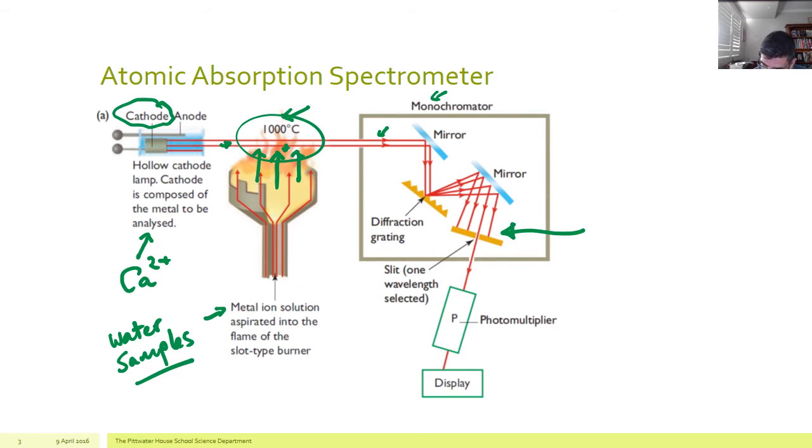For calcium, for example, this would correspond to a wavelength of about 422 nanometers. So that would be the wavelength that would come out. It would pass through a slit in the monochromator and into a photomultiplier.